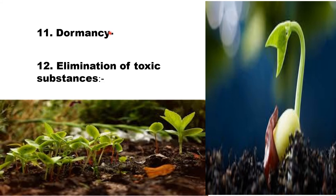Dormancy plays both beneficial and harmful roles depending on the need of the grower. If the next crop is needed immediately after harvesting, dormancy is not required; but if seeds are to be stored for future use, a period of dormancy is necessary. Elimination of toxic substances: some crops have toxic substances which must be removed for safe consumption — for example, elimination of erucic acid from Brassica oil or gossypol from cottonseed is necessary to make them fit for consumption.